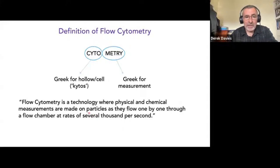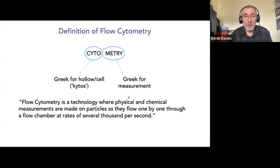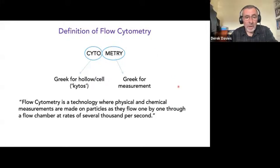I use the word 'particles' rather than 'cells' because we don't have to use whole cells — we can use parts of cells, extracellular vesicles, exosomes, isolated chromosomes, anything that gives us physical and chemical measurements. By physical measurements I mean the way particles interact with light, as they might on a light microscope. By chemical measurements I mean fluorescence labeling, as on a fluorescence microscope. The cells flow past the sensing point one by one, so we're making single-cell or single-particle measurements — that's a huge benefit of flow cytometry.